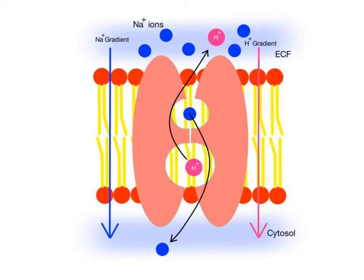Here is another example of an antiporter that passively transports sodium ions into the cell, but is pumping hydrogen ions out of the cell into the ECF from low to high concentration. This is an efficient way for cells to maintain their normal pH balance. If hydrogen ion concentration in the cytosol becomes too high, this will lead to an acidic pH that will cause imbalances in normal cell function.